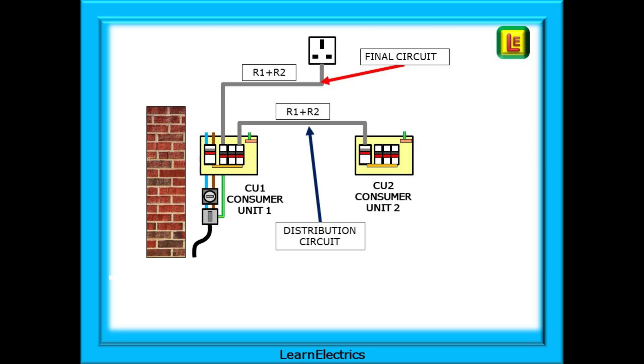Now we can add a second consumer unit which we've called CU2. This is supplied by a suitable cable from the circuit breaker in CU1, the consumer unit at the source of the installation. The cable between the two consumer units is called a distribution circuit.